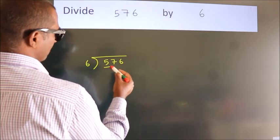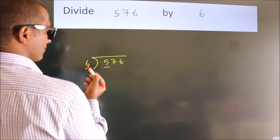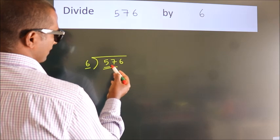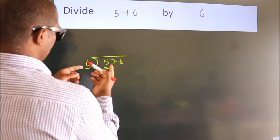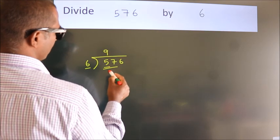Here we have 5, here 6. 5 is smaller than 6, so we should take 2 numbers. 57. A number close to 57 in the sixth table is 6 nines 54.